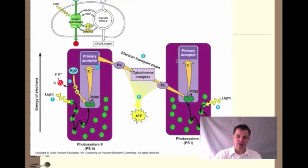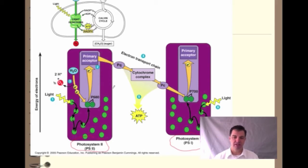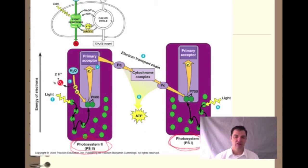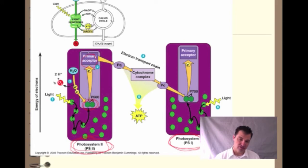In photosynthesis we have two photosystems. One's called photosystem I, one's called photosystem II. The flow makes more sense starting with photosystem II, which is why they look named backwards — they're named in the order in which they were discovered. What happens is the light energy transfers through the molecule to your special chlorophyll molecules, and then that energy transfers to your primary electron acceptor.